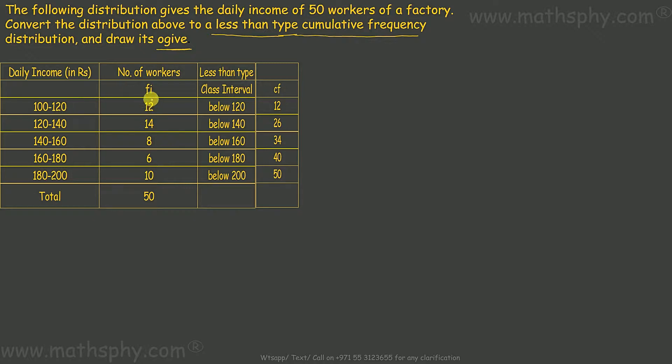100 to 120 we have total frequency 12. In that case below 120 will also be 12. When I write below 140, it means I am including this frequency also. So, 14 plus 12 gives you 26 means below 140, 26.